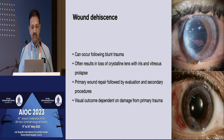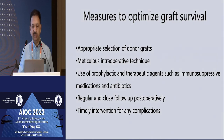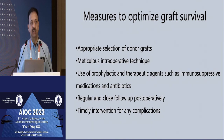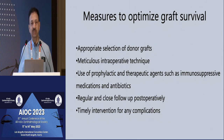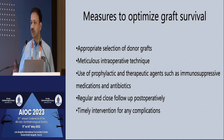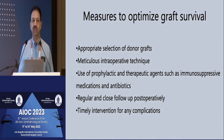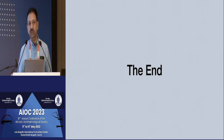To optimize graft survival: appropriate selection of the donor graft, meticulous intraoperative technique, use of appropriate prophylactic and therapeutic agents — especially immunosuppressive medications and antibiotics as necessary. Regular and close follow-up is very important. Spend time with the patient explaining all possible complications and why they need to respond immediately, and why they should have extra bottles of medication. Patients often say they ran out of medication and it wasn't available, so they didn't apply it. Timely intervention for any of these complications is key.